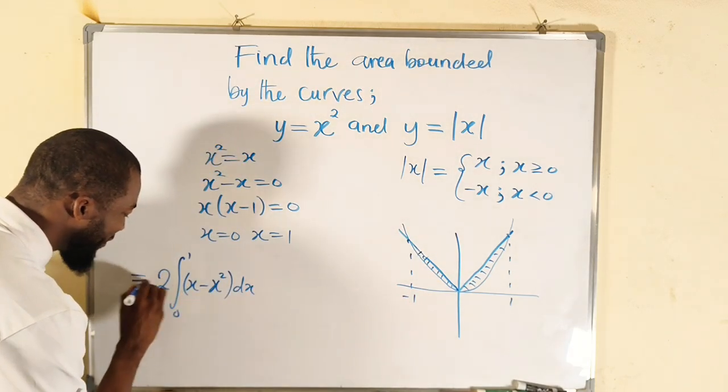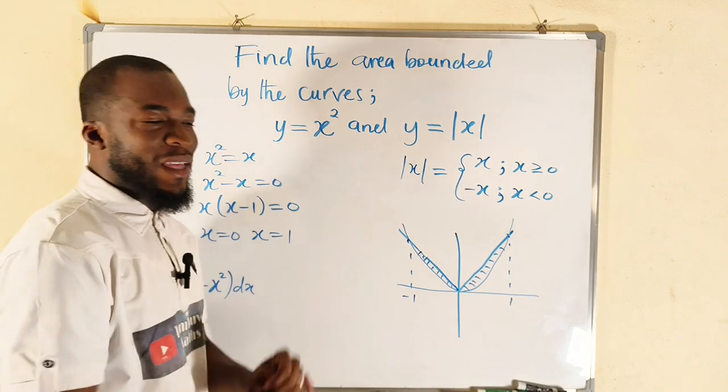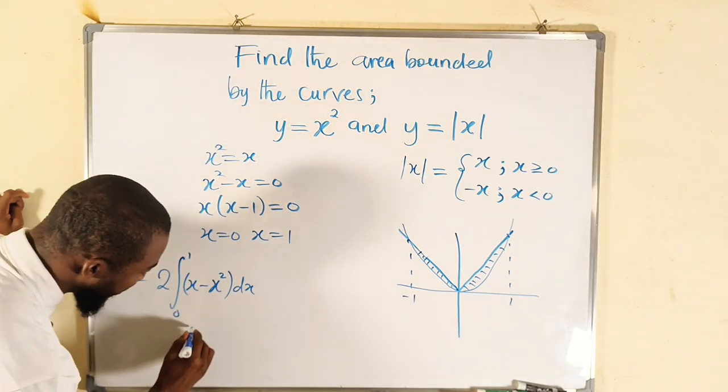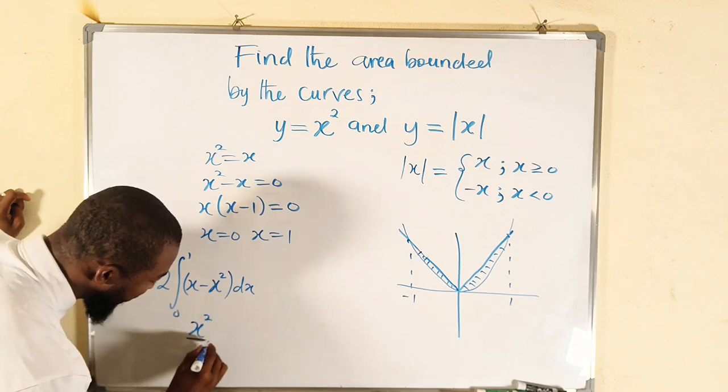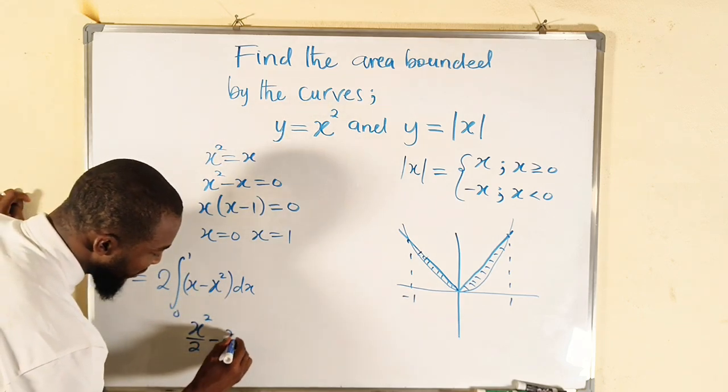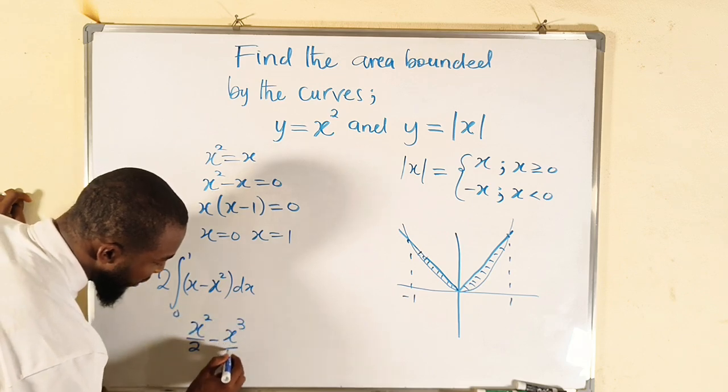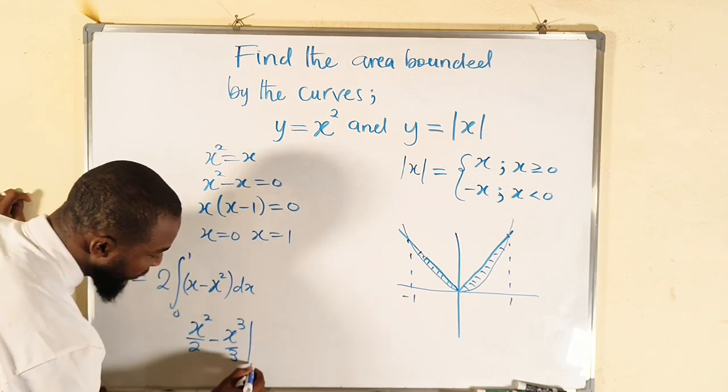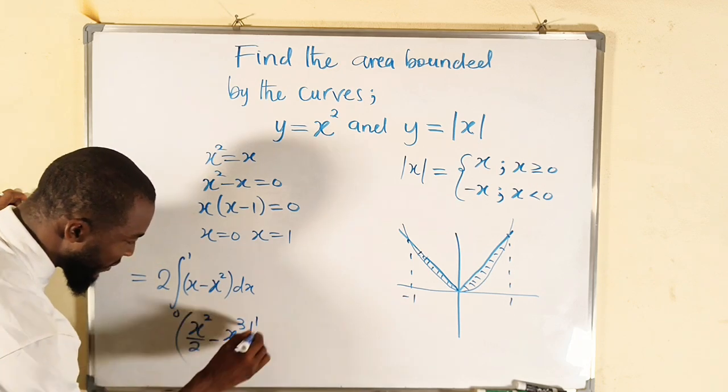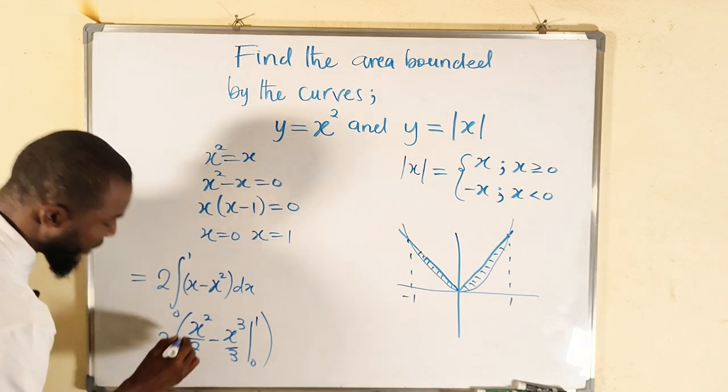If you integrate x, it is going to be x² divided by 2 minus if you integrate this, it becomes x³ divided by 3. Remember the boundary from zero down to one. The whole of this, remember to multiply by two.